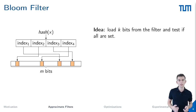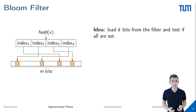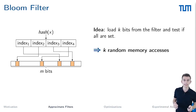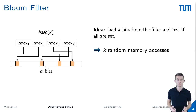The standard Bloom filter developed in 1970 consists of a single bit array. To test if a key is a member of the set, we load k bits from the filter and check if all are true. However, this approach has a major drawback on modern processors: we perform k random memory accesses, and for filters that exceed the caches we can expect the same number of cache misses.